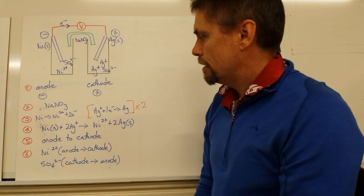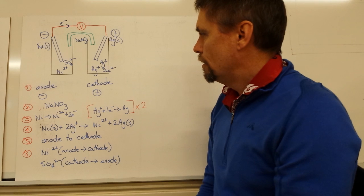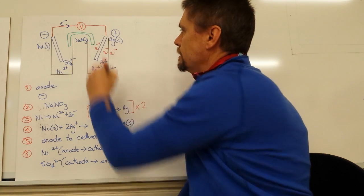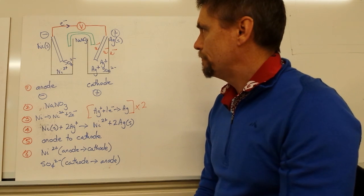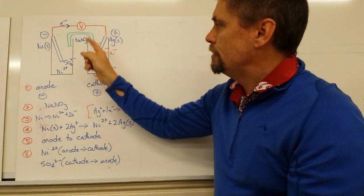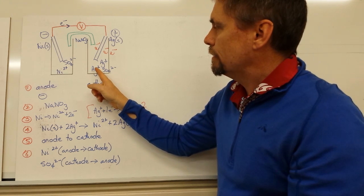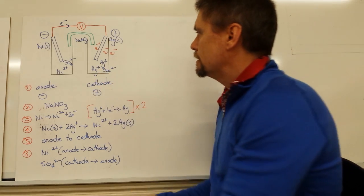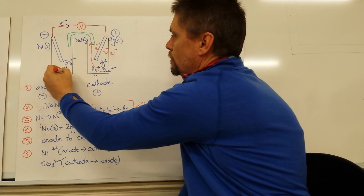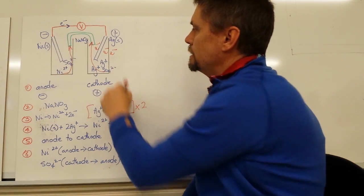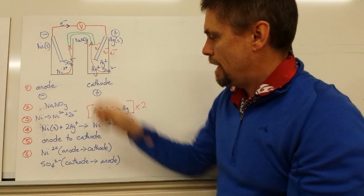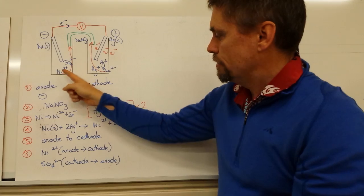The last step is to write down the flow of ions — anions and cations — in solution. If we keep collecting electrons on one side, we get a charge imbalance. We balance that charge across both half cells using the salt bridge as a permeable bridge: sulfate ions travel from the cathode side to the anode side to balance the positive charge, and nickel 2+ ions travel from the anode to the cathode to balance the negative charges.